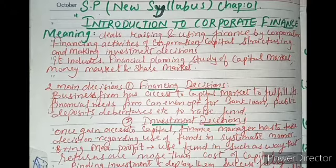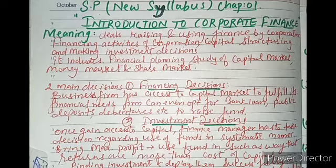Henry has expressed that Corporate Finance deals primarily with the acquisition and use of capital by business corporations. What is included in corporate finance? The things included are financial planning, study of capital market, money market, and share market.